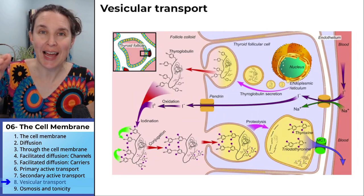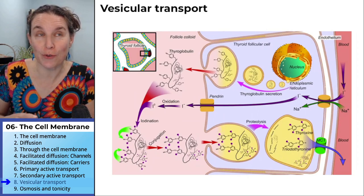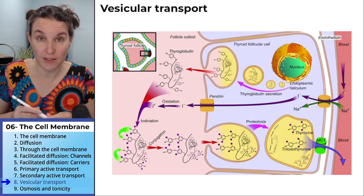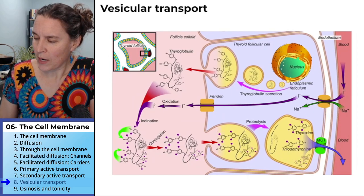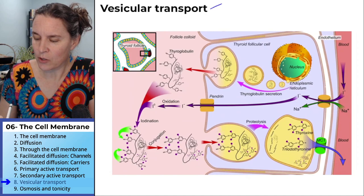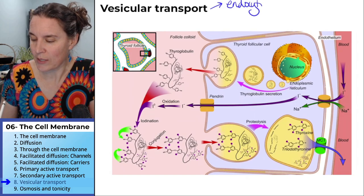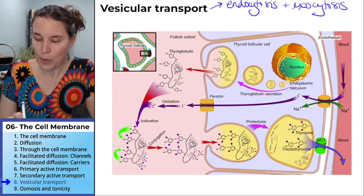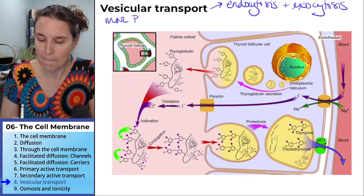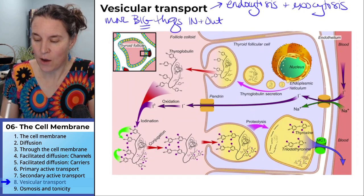Vesicular transport is the last way we're going to get particles, solutes, and things through the cell membrane. Vesicular transport consists of endocytosis and exocytosis, and the purpose is to move big things in and out of the cell.